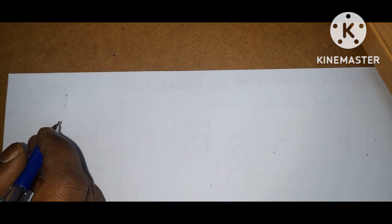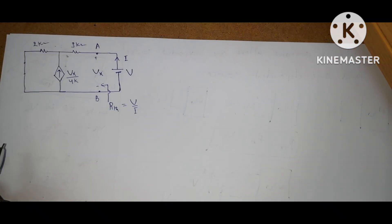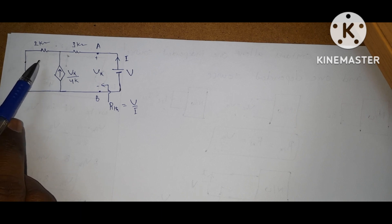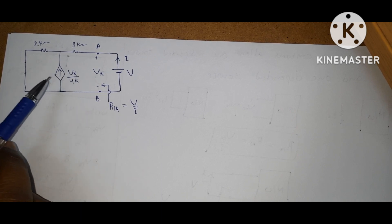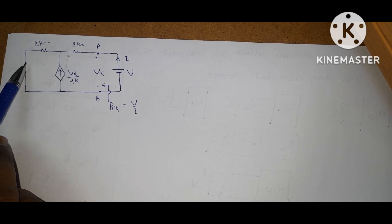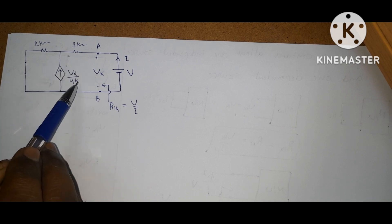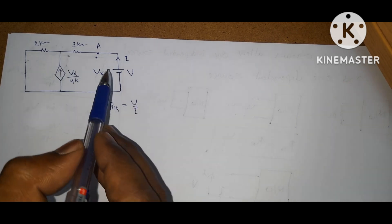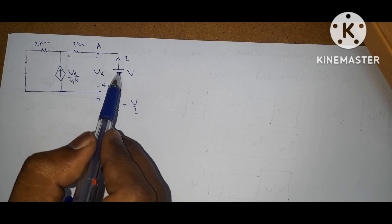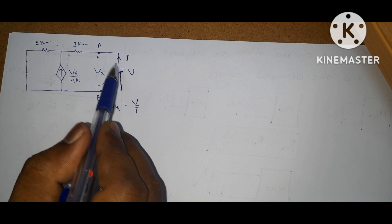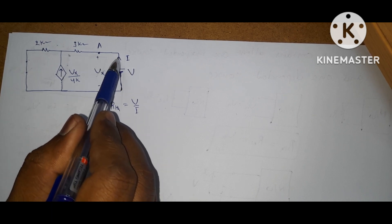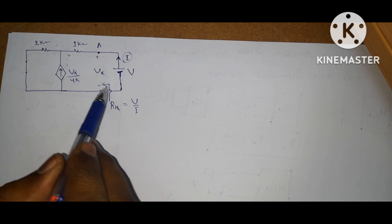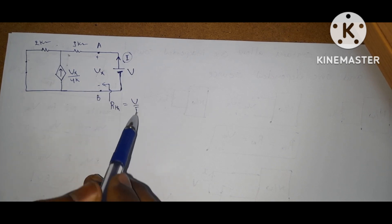Now Method 2: external source method. The circuit is modified so that all independent voltage sources are replaced with short circuit, and all independent current sources are replaced with open circuit. Here only a voltage source is given, so we replace it with short circuit and do not disturb the dependent current source. We connect an additional external voltage source V across the two terminals AB, and a current I flows through the network. R Thevenin equals V by I.